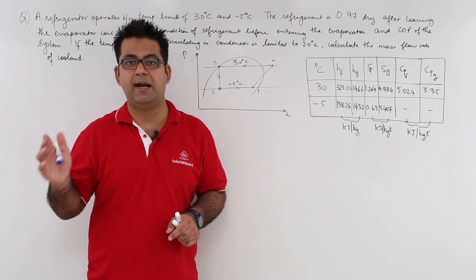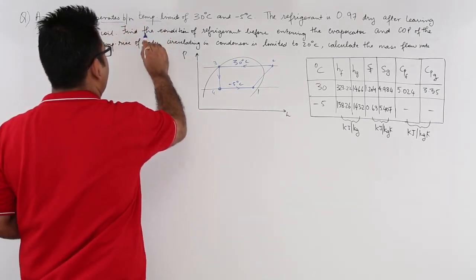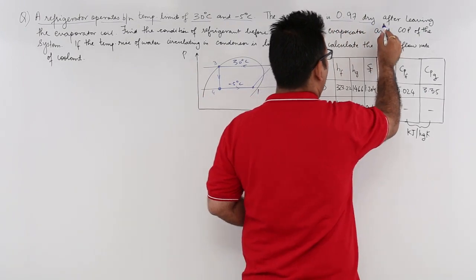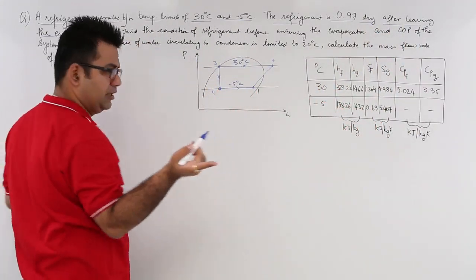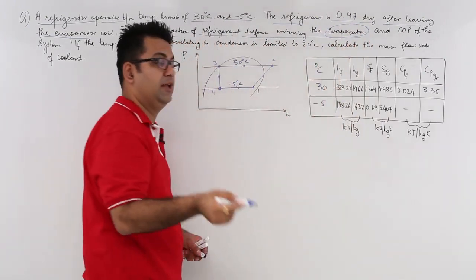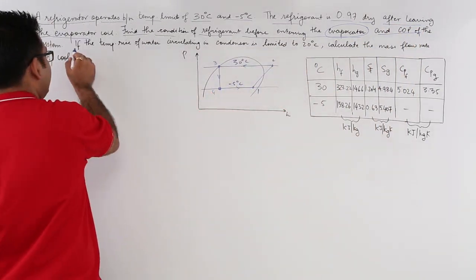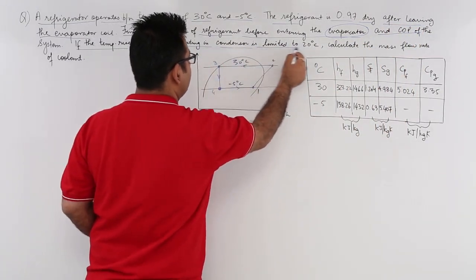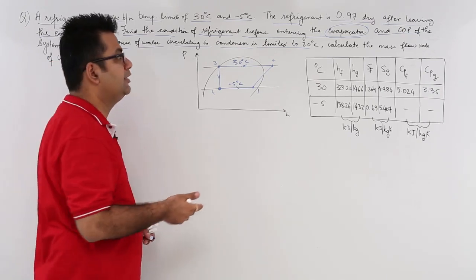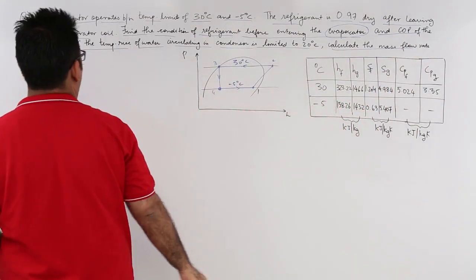Let us have a look at a numerical on ideal vapor compression cycle. A refrigerator operates between temperature limits of 30 and minus 5 degrees Celsius. The refrigerant is 0.97 dry after leaving the evaporator coil and before entering the compressor. Find the condition of the refrigerant before entering the evaporator, the COP of the system if the temperature rise of water circulating in the condenser is limited to 20 degrees Celsius, and find the mass flow rate of the coolant (water) in the condenser.